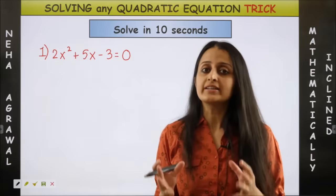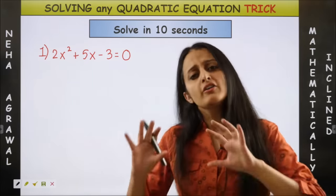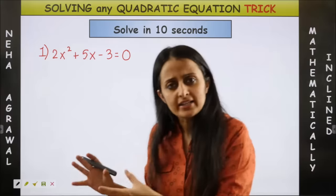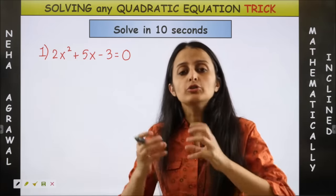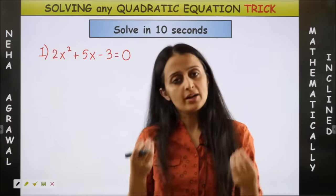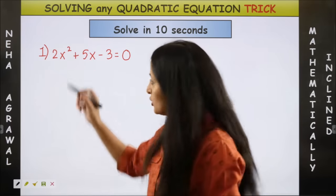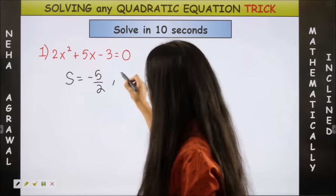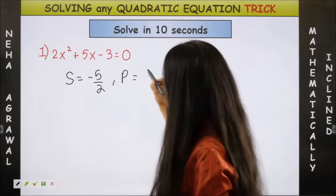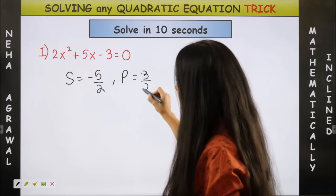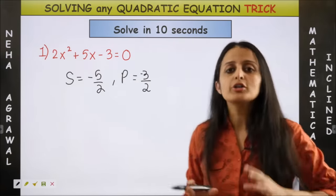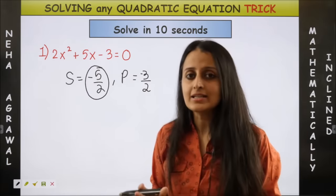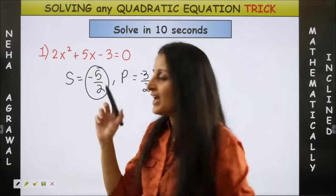So let's straight away take one example. In this question we all know basically factorizing any quadratic equation is when you talk of sum of its roots and product of its roots right. So sum of its roots is minus b by a as we can see and product is c by a that gives us minus 3 by 2. Now all you need to do is take the sum. Yes take the sum and just take its half.